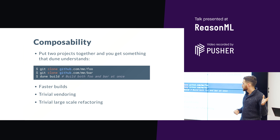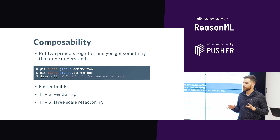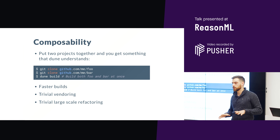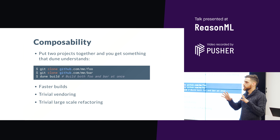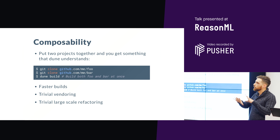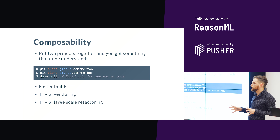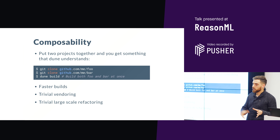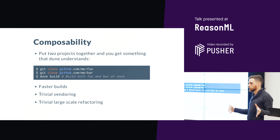If you imagine a world where all OCaml projects are building with Dune, you can effectively make a breaking change in a library and upgrade everything at once. That's something Dune allows you to do.